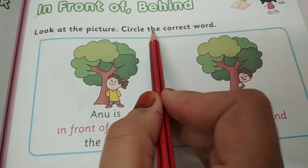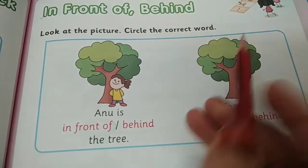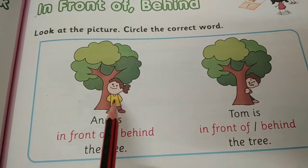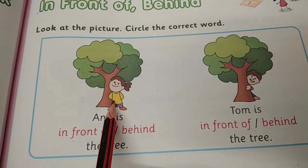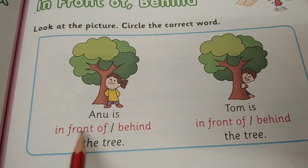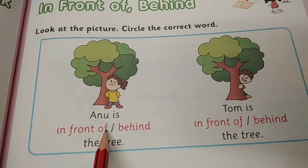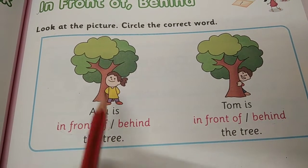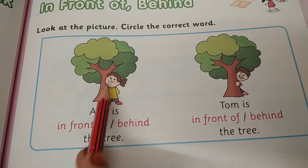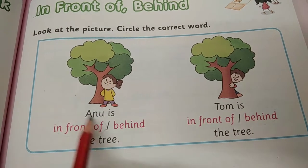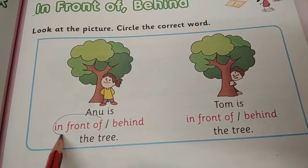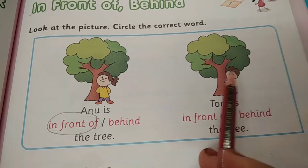Look at the picture. Circle the correct word. Picture mein aapko dikha hai, this is a tree and this is a girl. Girl's name is Anu. Is Anu in front of or behind the tree? Anu tree se aage hai ya peechhe hai? In front of. So yaha pe hum kya karenge? In front of ko circle karenge.